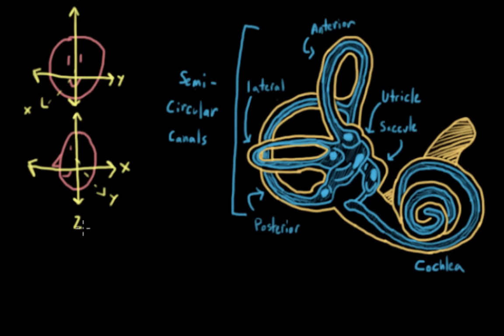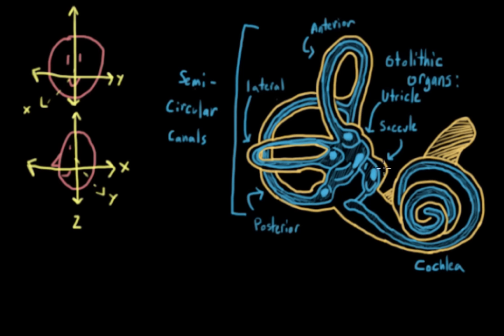Another part of our inner ear that gives us information relating to balance and spatial orientation are the otolithic organs. The otolithic organs include the utricle and the saccule, which I've labeled here. They help us to detect linear acceleration and head positioning. Within these structures are crystals, actual calcium carbonate crystals, that are attached to hair cells within a viscous gel substance.